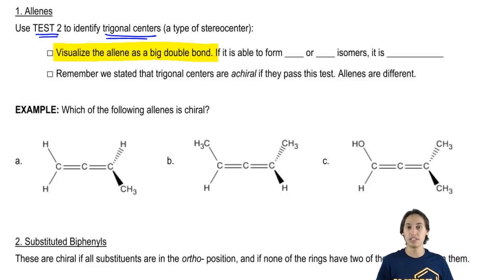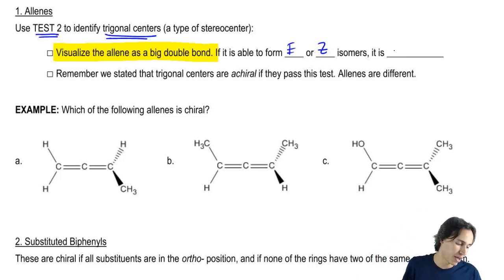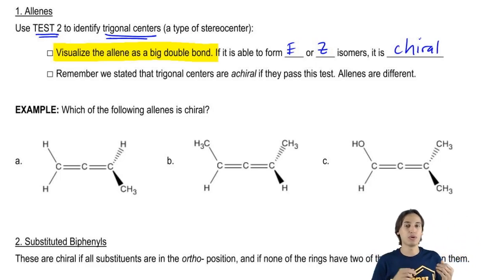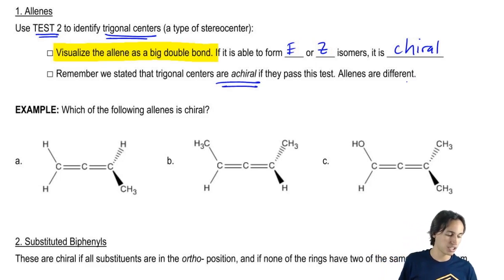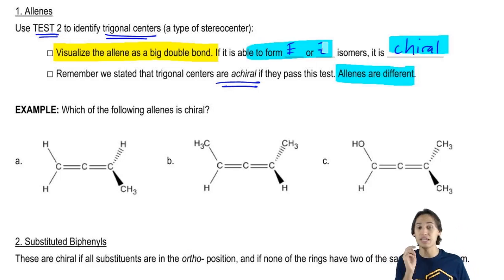By the way, this is just my way of solving these, but I think it's helped a lot of students and I think it will help you guys. If it's able to form E or Z isomers after visualizing it as a big double bond, that means that it's chiral. So remember that when I taught you about trigonal centers, I told you that they're actually achiral if they pass the test. But allenes are different. Allenes are going to be chiral if they can form E or Z through this weird long double bond.